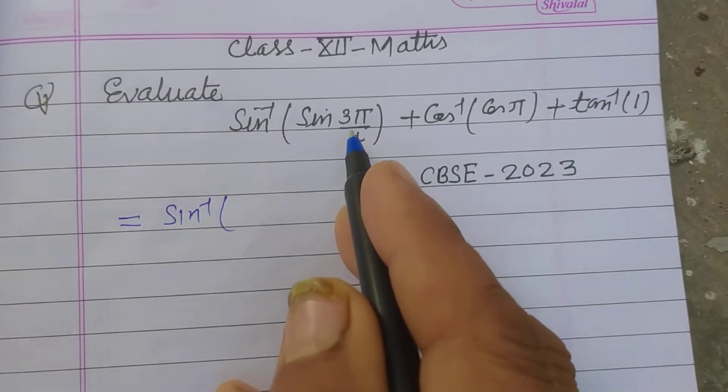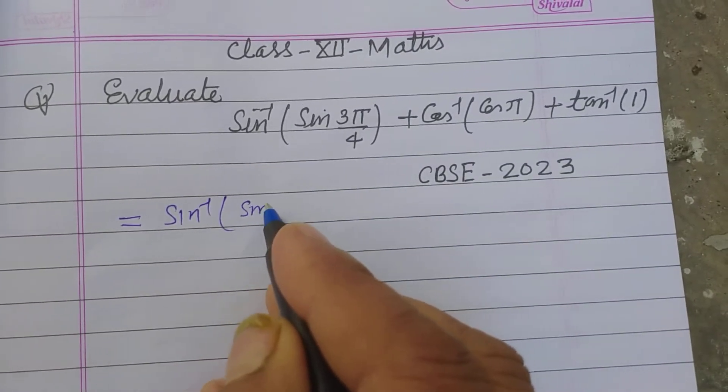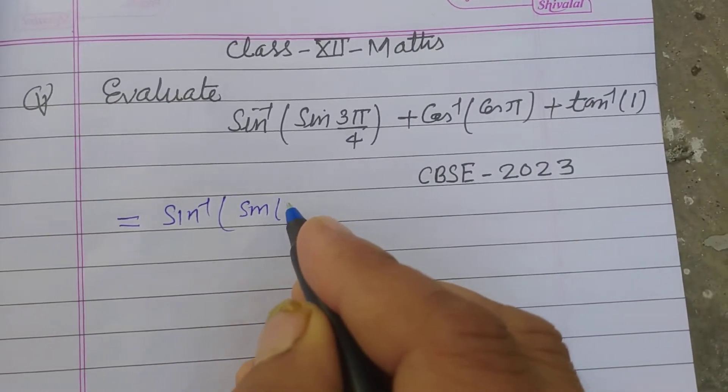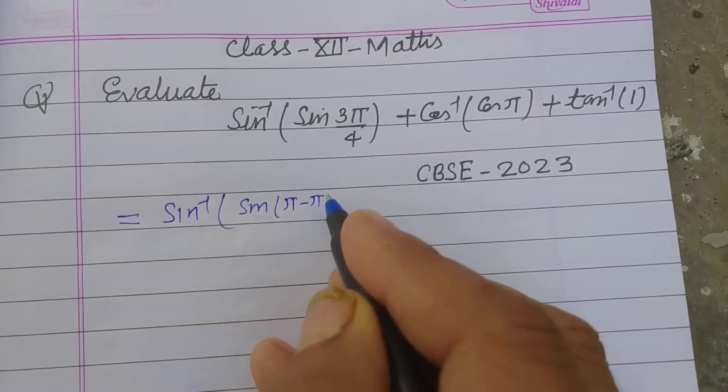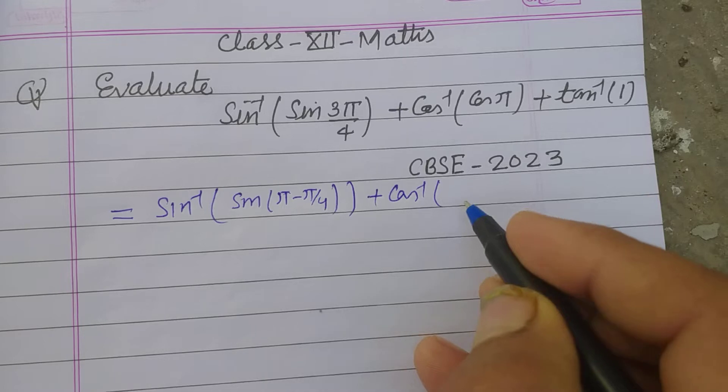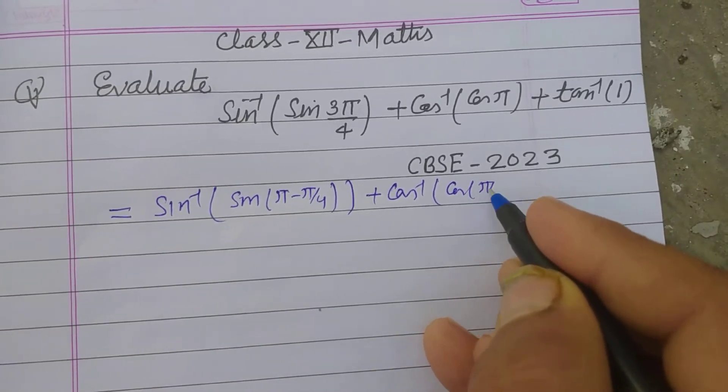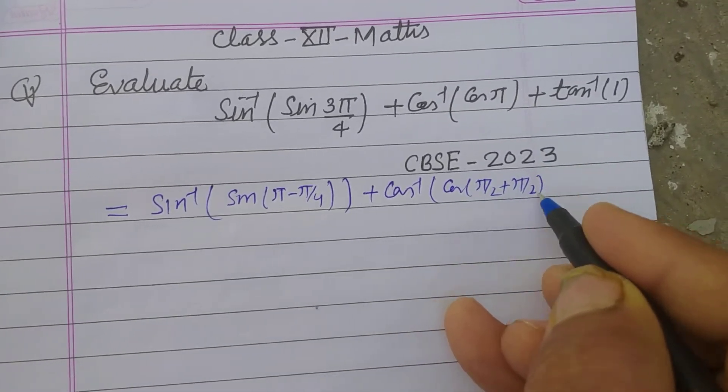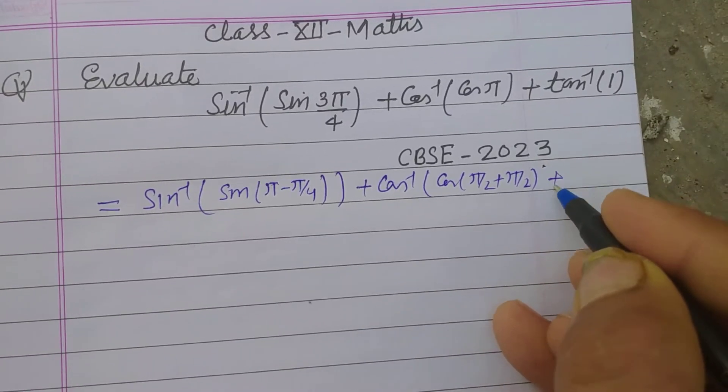So student, here sine inverse sine 3π/4 is given, so we write sine 3π/4 as π minus π/4. And cos inverse cos π can be written as cos π/2 plus π/2.